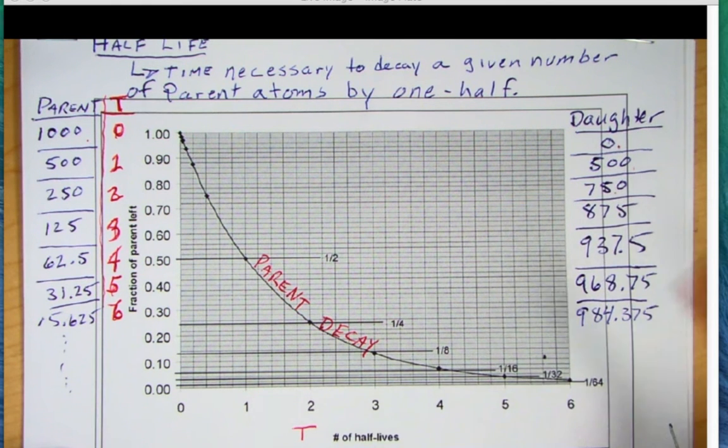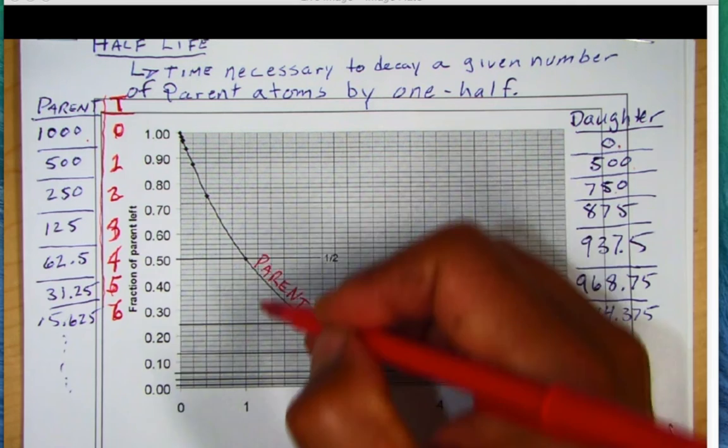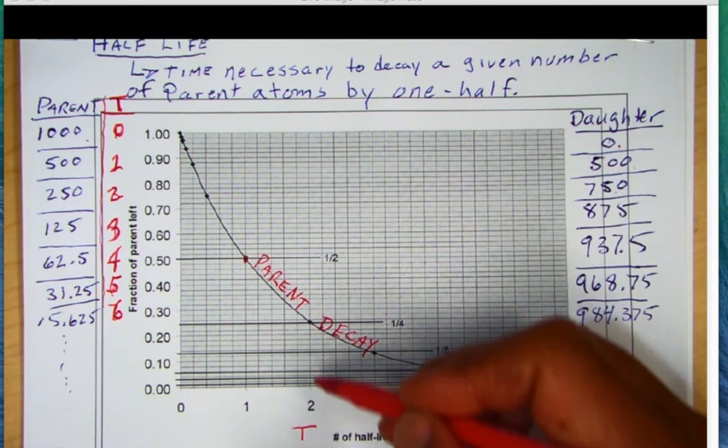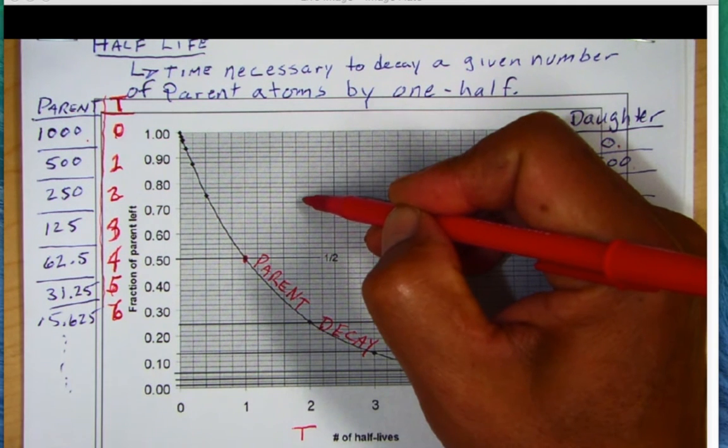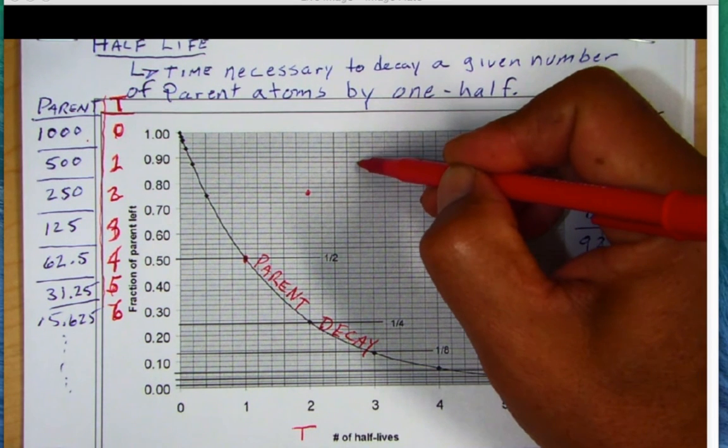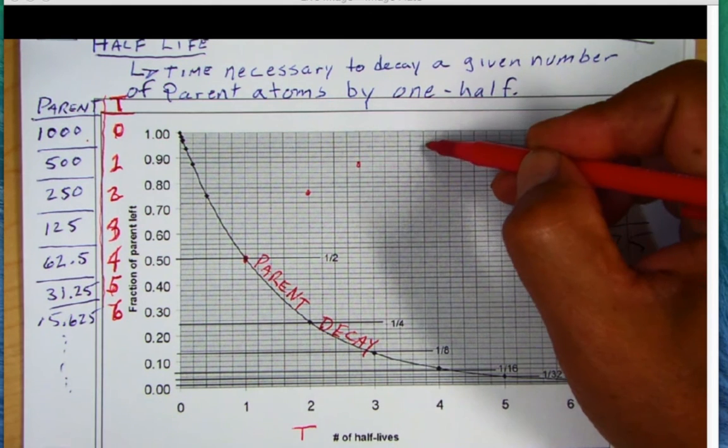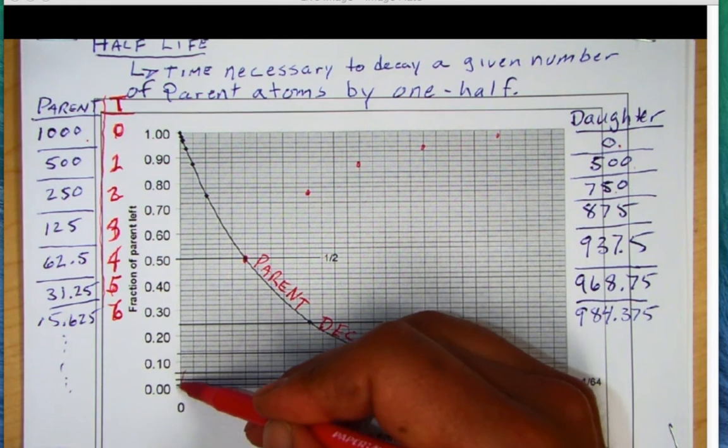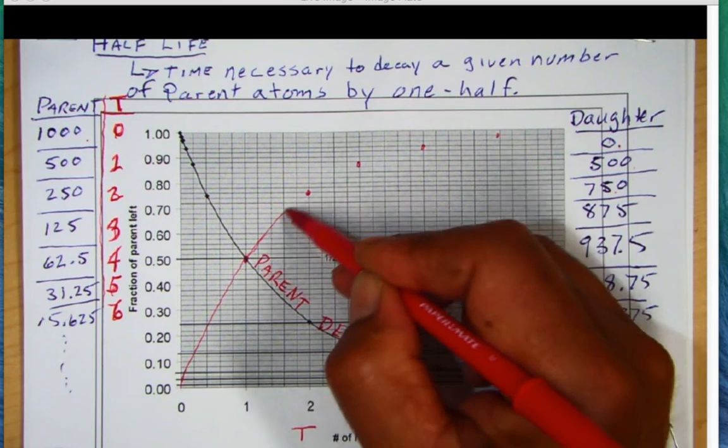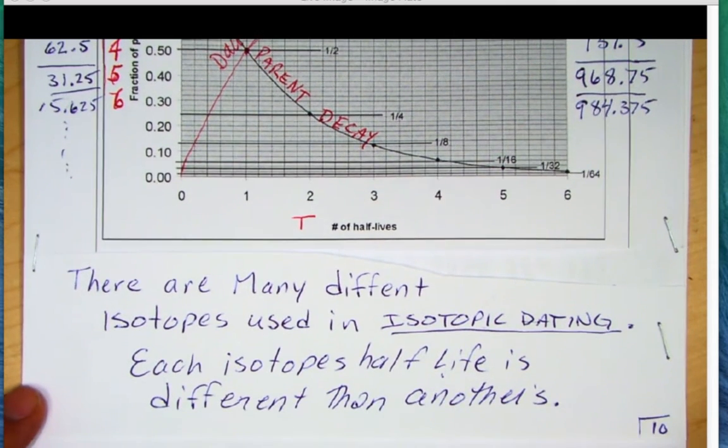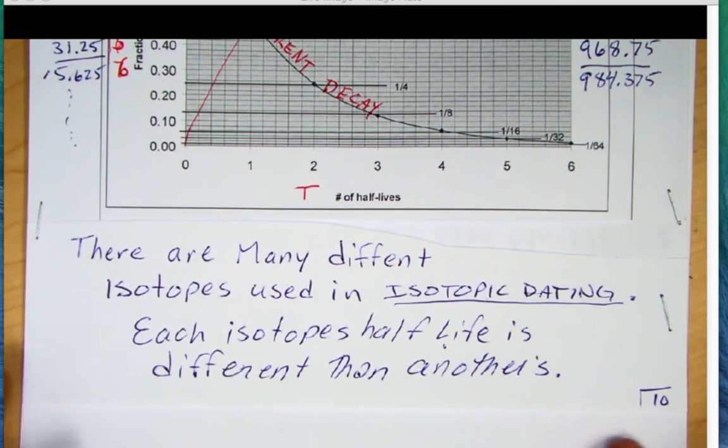And then at two half-lives, we would have grown 750 daughter products. So in essence, there's another curve that we could plot on here, and that would be the daughter growth. So after one half-life, we'd have both 500 parents and 500 daughters. After two half-lives, we'd be at 750, right here, daughters. And then for three, 875, right in here. And then you can see, as we keep going, we're just going to be cutting this in half and in half. And we'll produce, basically, a mirror curve that's going to show daughter growth. Remember, the key to the daughter growth is that this is radiogenic daughter.